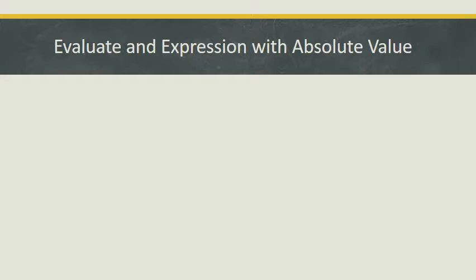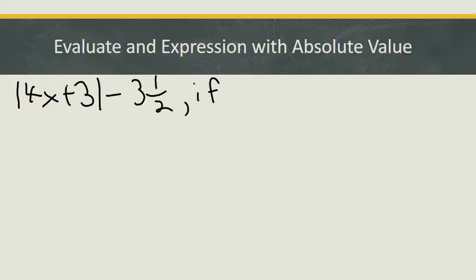So here we go. Let's say we've got an expression and we've got the absolute value of 4x plus 3 — close my absolute value symbol — minus 3½, if x is equal to minus 2.